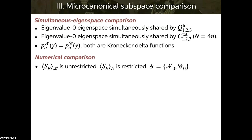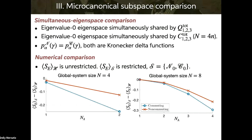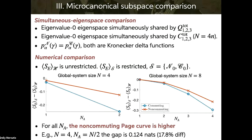We begin with a numerical comparison. The unrestricted page curve is denoted with subscript H, and the restricted one has subscript S, either N or C depending on whether it's the non-commuting or commuting case. These plots show the difference between the unrestricted and the restricted page curve on the y-axis, with subsystem size N_A on the x-axis, plotted up to N_A equals N over 2 because they're symmetric. For all values of N_A, the non-commuting page curve is greater. The biggest difference is in the N equals four case — a difference of one-eighth of a natural unit, which is about an 18% difference.